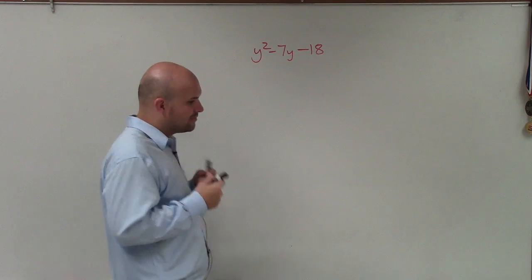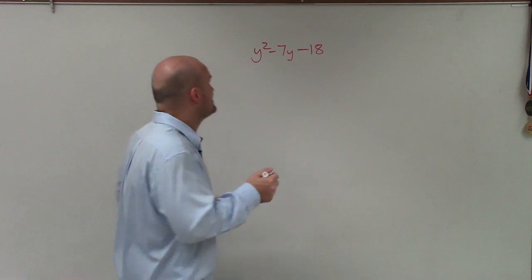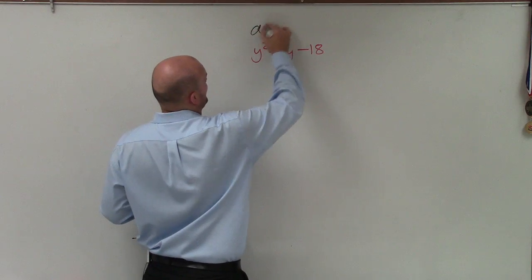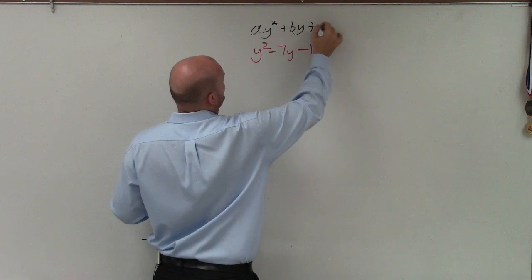But to understand the diamond method, we have to understand what is standard form. Standard form of a quadratic can be written as ay² plus by plus c.